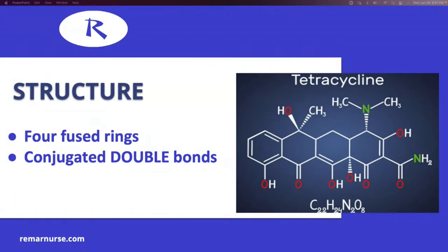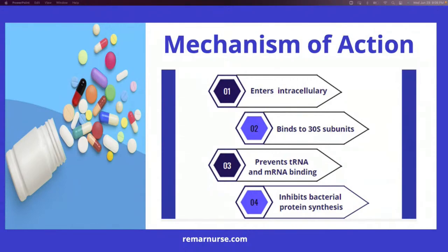Tetracyclines work by entering into the cell. They enter the cell and bind to what is called the 30S subunit ribosome. When the tetracycline is binding to these ribosomes, it prevents the tRNA and the messenger RNA from communicating. That transfer RNA and messenger RNA communicate to create protein synthesis. So a tetracycline is going to shut all that down — it gets in the way, which is great for us but bad for the bacteria, because then the bacteria cannot replicate. This is how tetracycline is very effective.